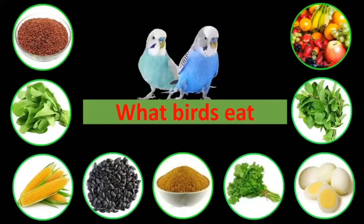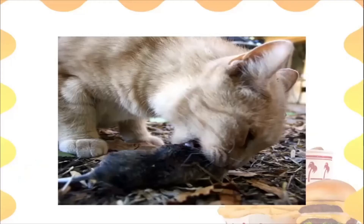We discussed what birds eat. Birds can eat millets — for example ragi, which is a kind of grain. They eat vegetables also, leafy vegetables like coriander, spinach, and mint. They can also eat seeds of different kinds of fruits, maize, and fruits of course — birds love fruits. We talked about all this last time.